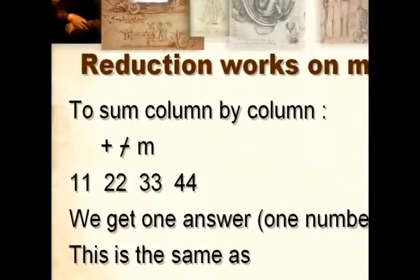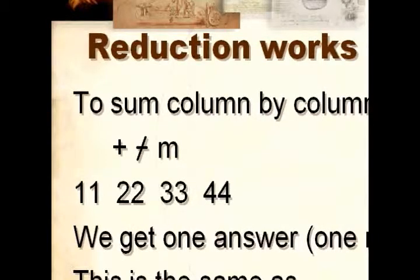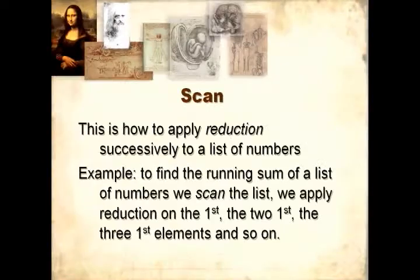So plus slash bar M sums up on the columns, and we get four numbers. Scan. This is how to apply reduction successively to a list of numbers. For example, to find the running sum of a list of numbers, we scan the list.